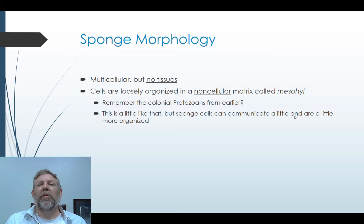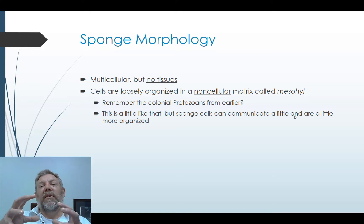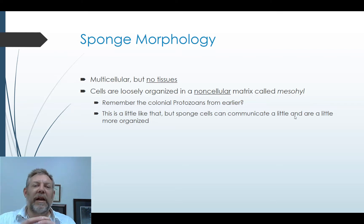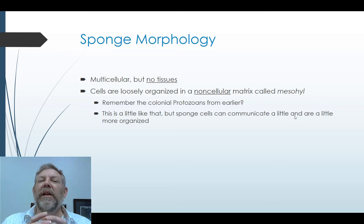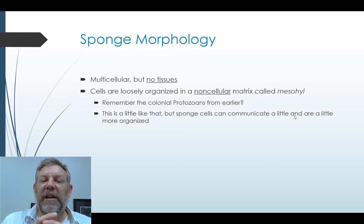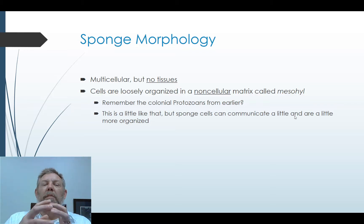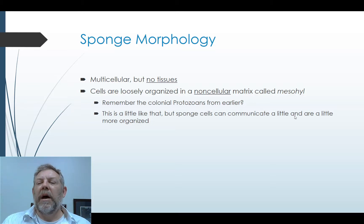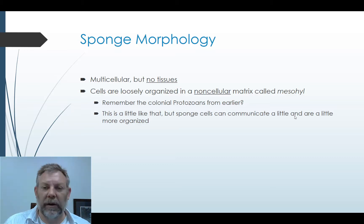When we talked about the protozoans, we had the Volvox — those colonial protozoans that were all individual organisms living together and sort of coordinating. Sponges are like that but the next step up. The cells aren't individual organisms; they cannot exist on their own. But they don't quite form tissues and don't form tight junctions like cells do in other animals. The cells can communicate a little bit, so this is sort of the next step up in organization.